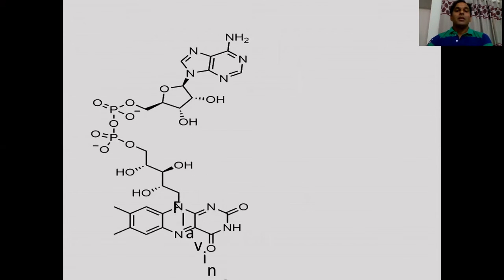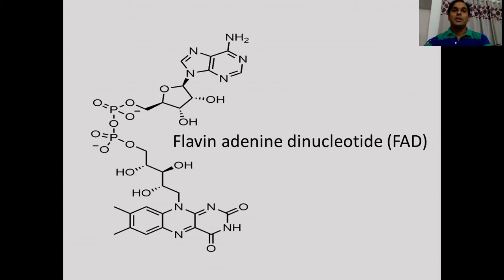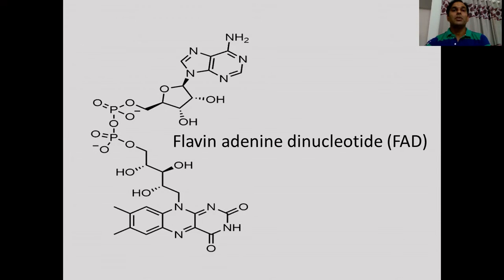Flavin adenine dinucleotide, or FAD, is a redox coenzyme associated with various proteins. FAD can exist in four different redox states: flavin N5-oxide (quinone), semiquinone, or hydroquinone. FAD is converted between these states by accepting or donating electrons. In its fully oxidized quinone form, FAD accepts two electrons and two protons to become FADH2 (hydroquinone). The semiquinone FADH can be formed by reduction of FAD or oxidation of FADH2. Some proteins generate a super-oxidized form of the flavin cofactor, the flavin N5-oxide.